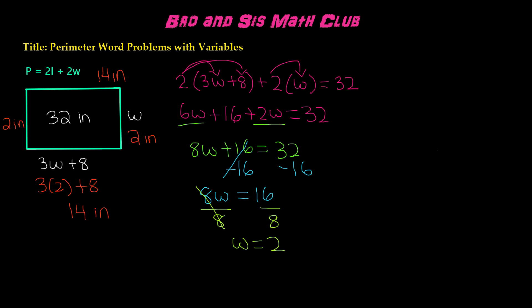14 plus 14 is 28, plus 2 is 30, plus 2 is 32, and that is our perimeter. That means the length equals 14 inches, and the width equals 2 inches.